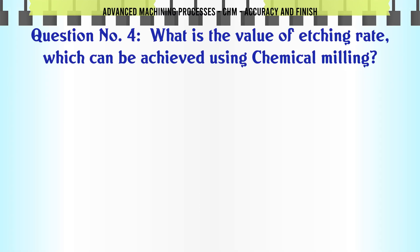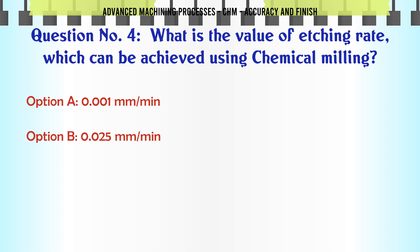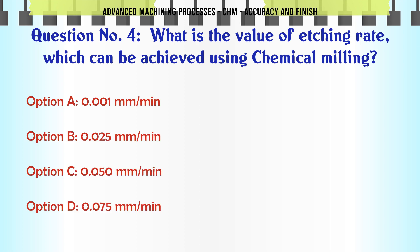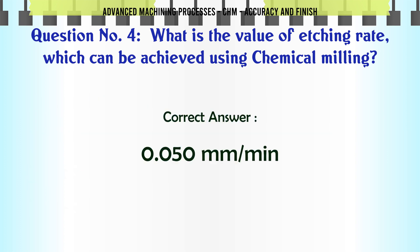What is the value of etching rate which can be achieved using chemical milling? A. 0.001 mm/min. B. 0.025 mm/min. C. 0.050 mm/min. D. 0.075 mm/min. The correct answer is 0.050 mm/min.